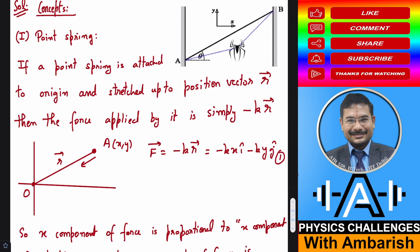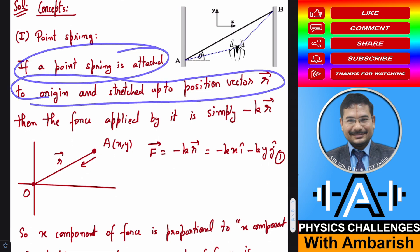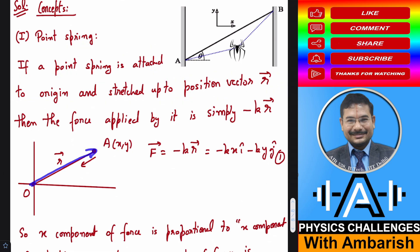What are the concepts involved here? First of all, we have to understand what is a point spring. Point spring means it has got zero natural length. Suppose a point spring is attached to origin and stretched to a position vector R. If I stretch it all the way to position vector R, then the force applied by this point spring on this end will be simply minus K times R.